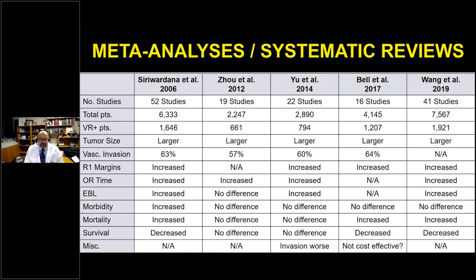Conclusions from the meta-analyses as a whole: tumors that underwent venous resection tended to be larger; vascular invasion was reported at about 60% in four of the five studies; four studies showed higher positive margin rates with venous resection, longer OR times, and higher blood loss; one study showed higher morbidity; two showed increased mortality; some showed decreased survival while others showed no difference; and one meta-analysis even looked at cost-effectiveness.